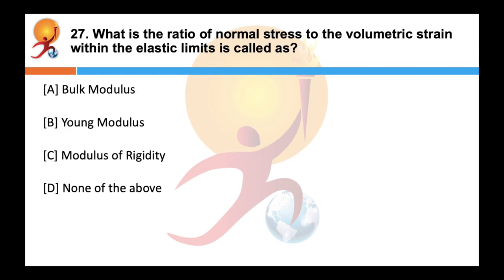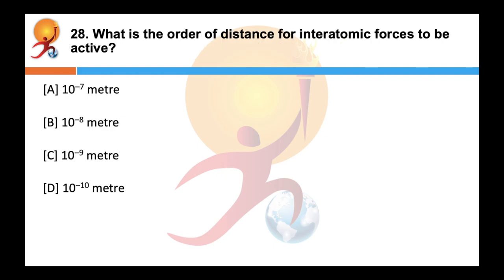What is the ratio of normal stress to the volumetric strain within the elastic limit known as? Correct answer is bulk modulus, denoted by K. What is the order of distance for inter-atomic forces to be active? Correct answer is 10⁻¹⁰ meters. The forces between atoms due to electrostatic interaction are called inter-atomic forces, and they are active when the distance between two atoms is of the order of atomic size, i.e., 10⁻¹⁰ meters. These forces are electrical in nature.